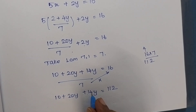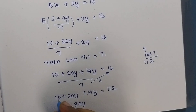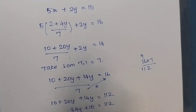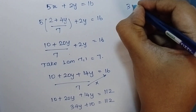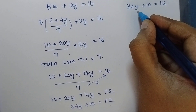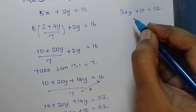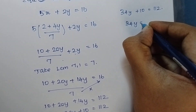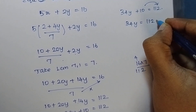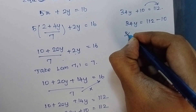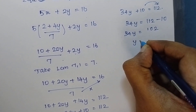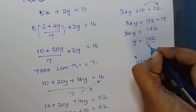So 20y plus 14y is equal to 34y, and 34y plus 10 is equal to 112. I am going to keep the y term and move 10 to the right side. So 34y is equal to 112 minus 10, which is 102. Therefore y is equal to 102 divided by 34.